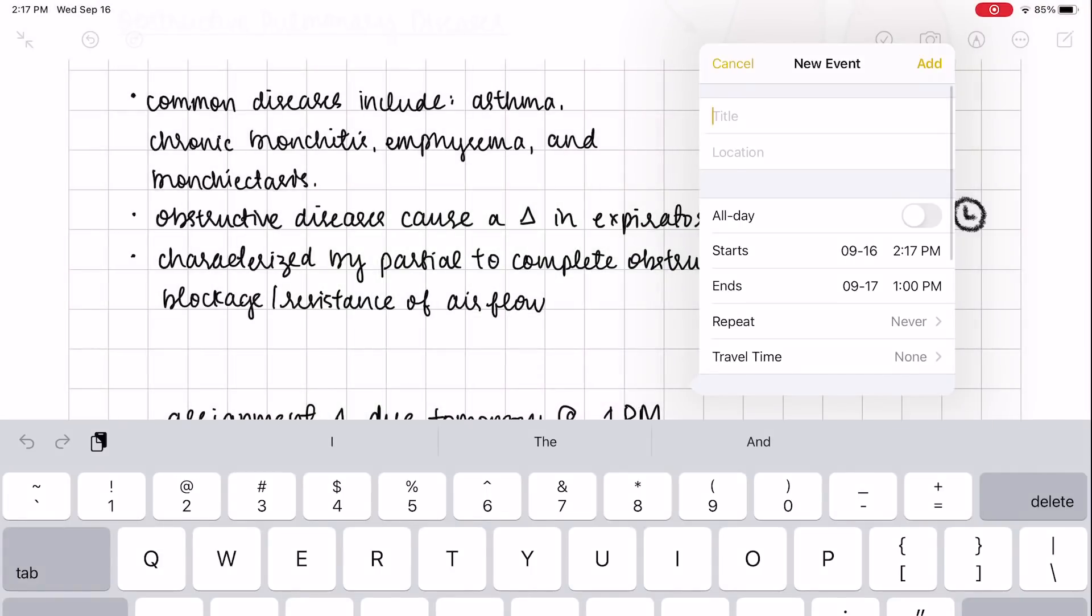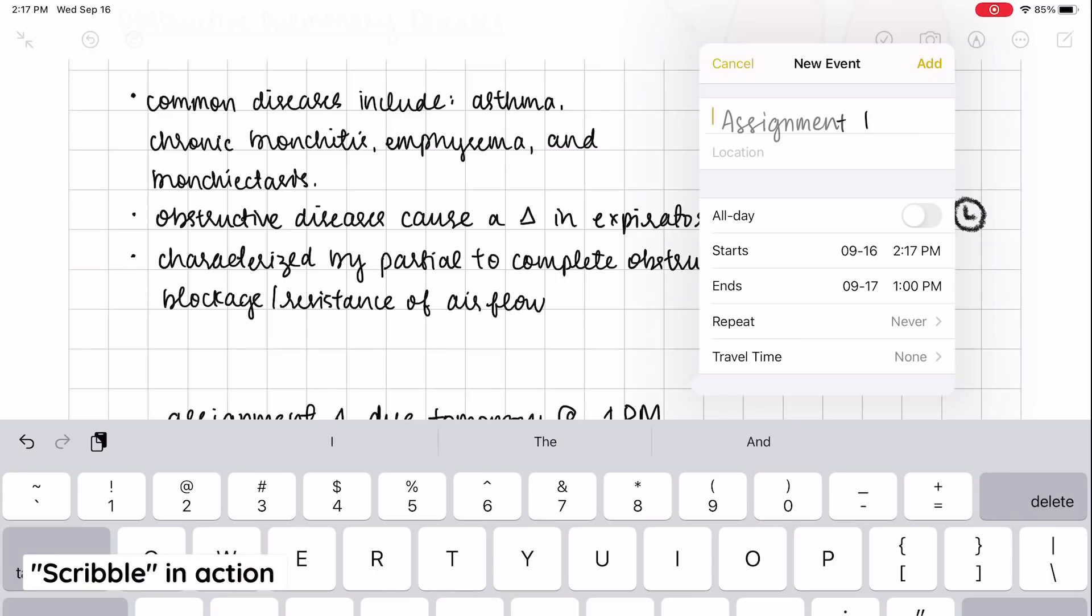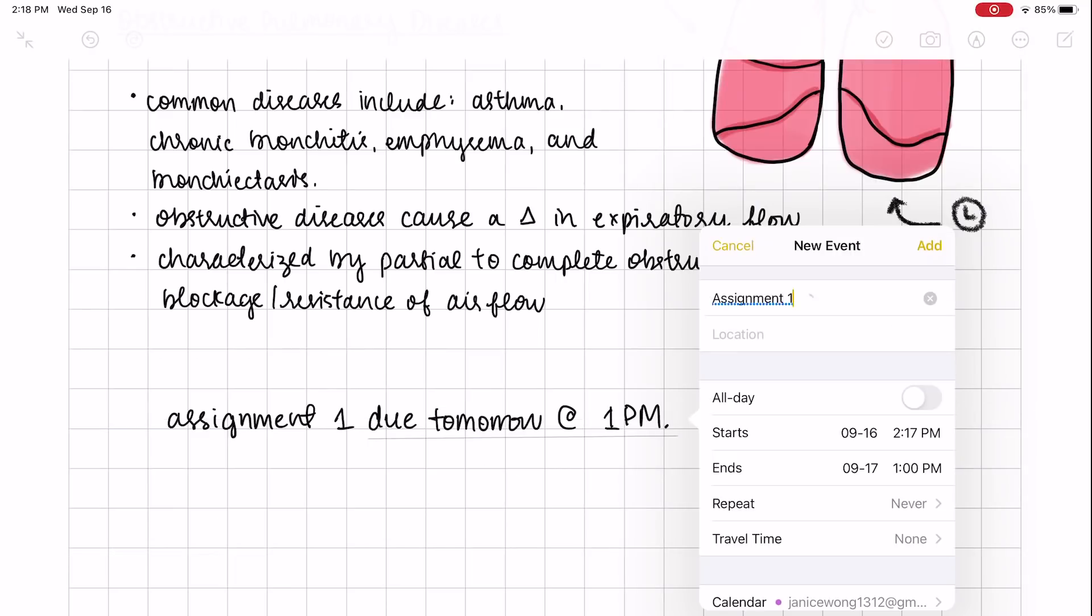Notice how when I'm adding the event, I'm actually writing the name of it instead of typing it. That's Scribble. You can write into any text field and your handwriting will turn into text, so you don't have to put down your Apple Pencil and therefore, your distractions or interruptions are minimized.